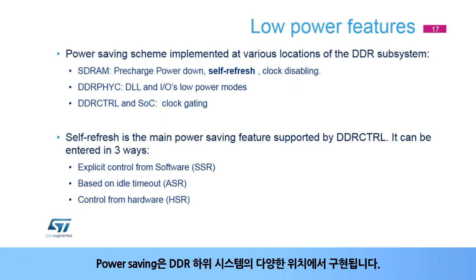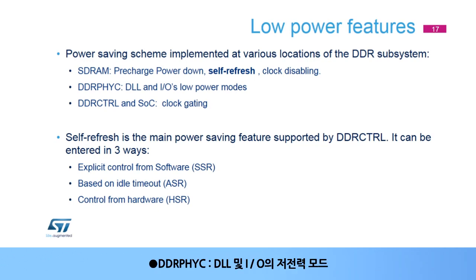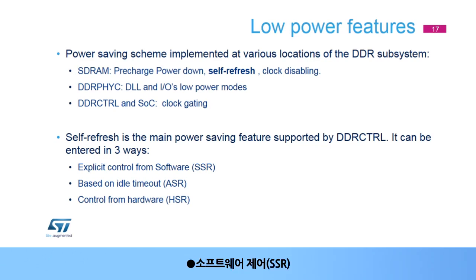The power saving scheme is implemented at various locations of the DDR subsystem: SDRAM with pre-charged power down, self-refresh, and clock disabling; DDRPHYC with DLL and IOS low-power modes; and DDRCTRL and SOC with clock gating. Self-refresh is the main power saving feature supported by DDRCTRL. It can be entered in three ways: explicit control from software, or SSR; based on an idle timeout, or ASR; or control from hardware, or HSR.